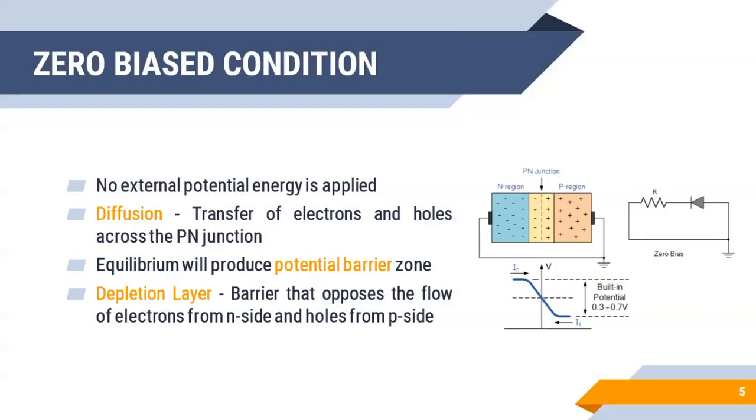Coming to zero bias condition, from the name itself, we can understand that there is no external voltage applied to the PN junction. But here we have combined P-type and N-type materials, so majority carriers from high concentration region will try to move into low concentration region.